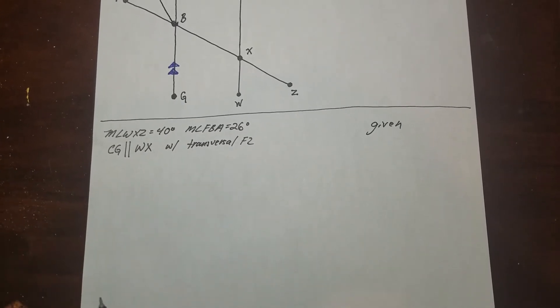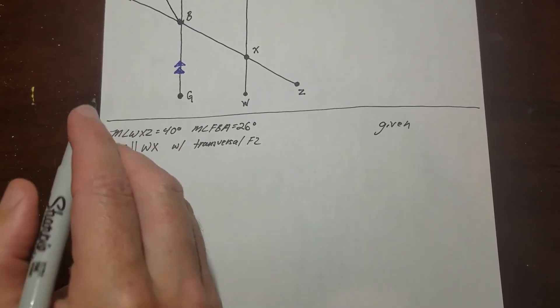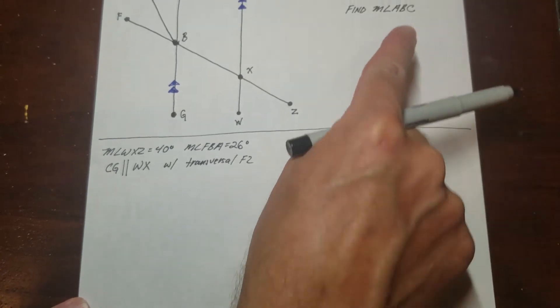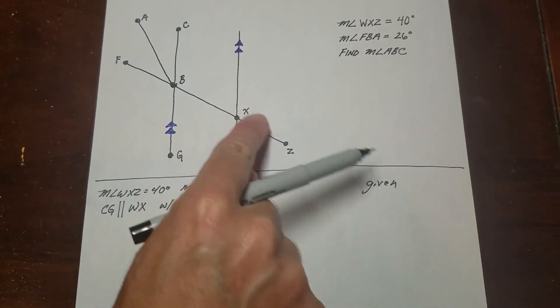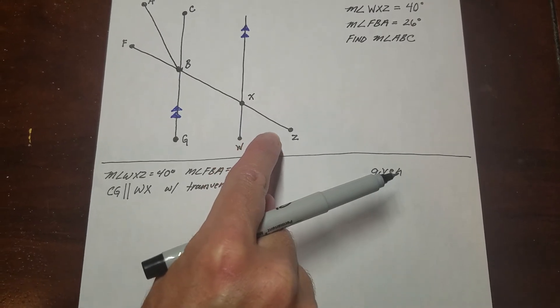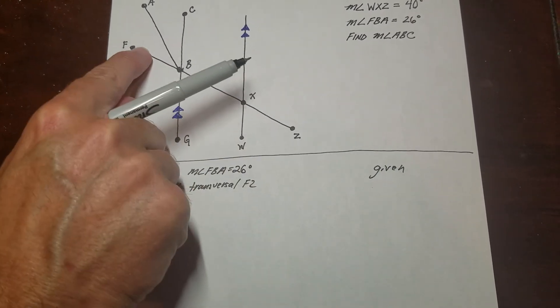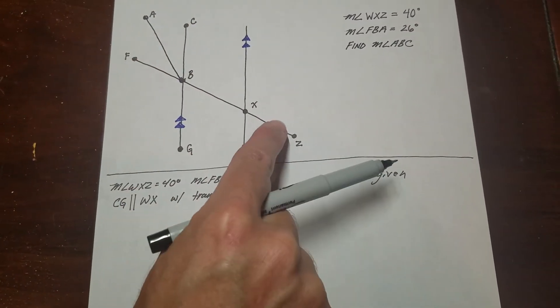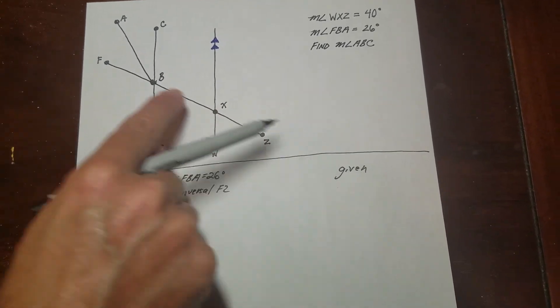So the first thing I'm going to do is I'm going to start with what it tells me. So WXZ, so WXZ is this guy down here. And I know I need to figure out this up here, which is ABC. So I need to somehow get a number from way over here, over here.